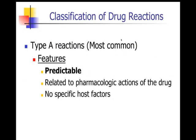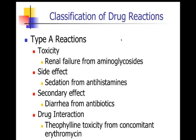This is an old classification scheme discussing type A and type B reactions. Type A reactions are the most common and are predictable based on the known pharmacologic effects of the drug, not really related to the host itself. Examples of type A reactions include renal failure from aminoglycosides, drowsiness from diphenhydramine, and diarrhea from antibiotics.